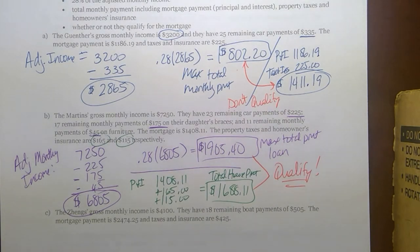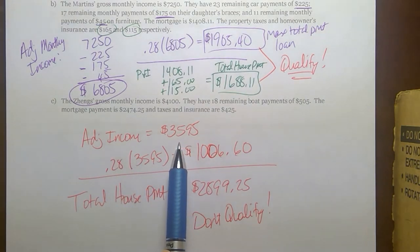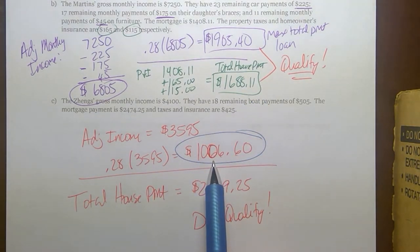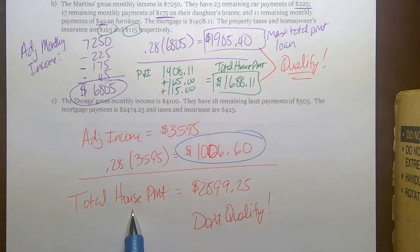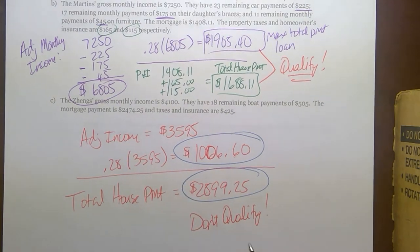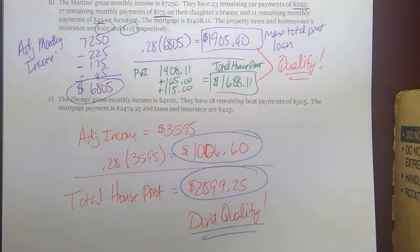Work out the Zings on your own — pause the video, work it out, then check your answer. Unfortunately, the Zings do not qualify. Their adjusted monthly income comes to $3,595. Twenty-eight percent of that means the bank won't loan them more than $1,006.60 for a total house payment. But principal, interest, taxes, and insurance would cost $2,899.25 a month — more than double what they're allowed. If you didn't get those values correct, go back and find your mistake, or contact me or a math tutor.